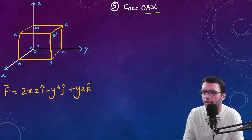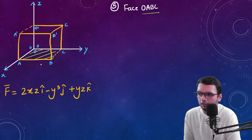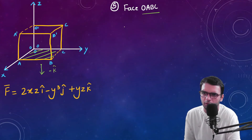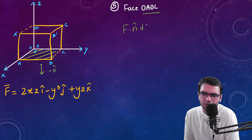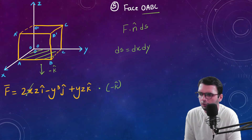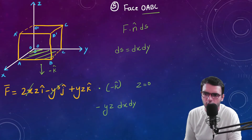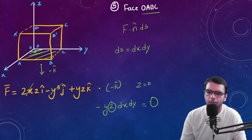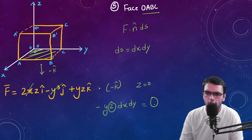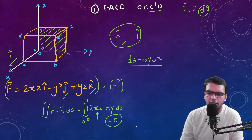For face OABC, the normal vector is in the minus k-cap direction. The surface element is dS equals dx dy since it is the x-y plane. Taking the dot product with minus k-cap, the i and j terms vanish, leaving minus yz. But here z equals 0, so the entire expression becomes 0. This face contributes nothing.